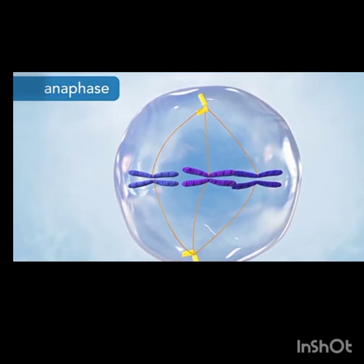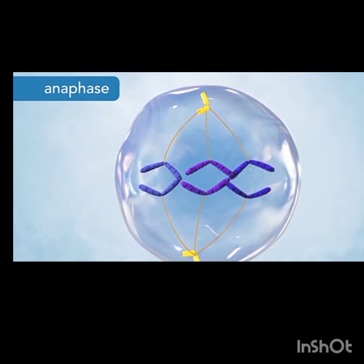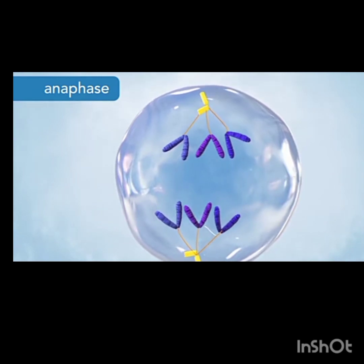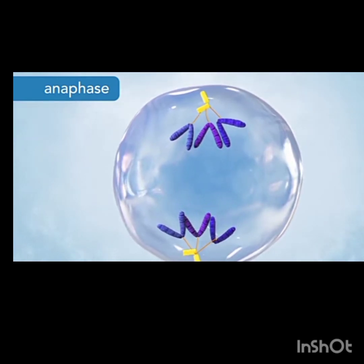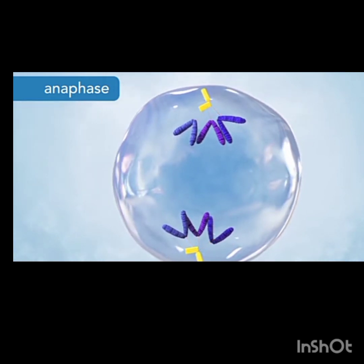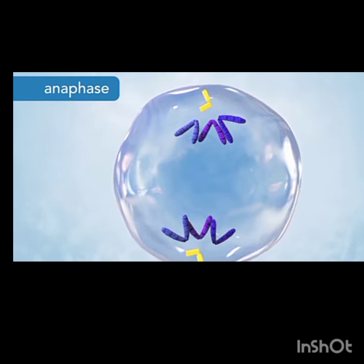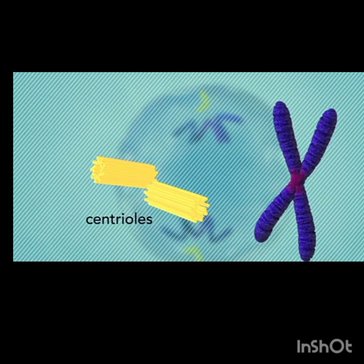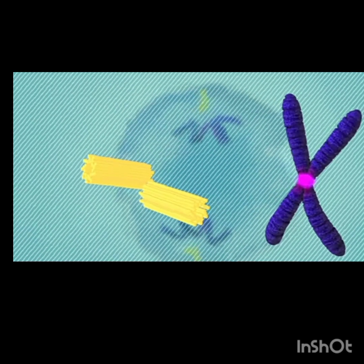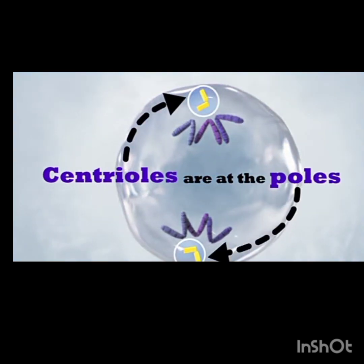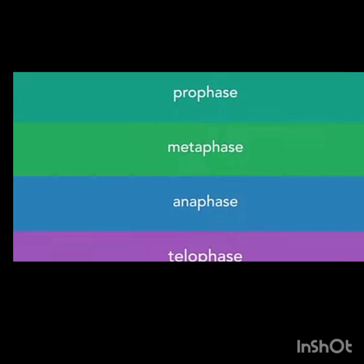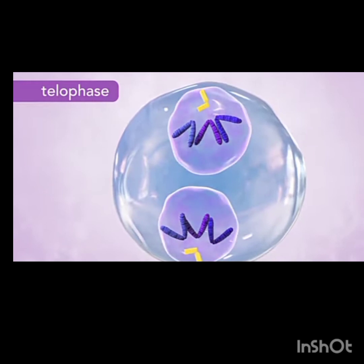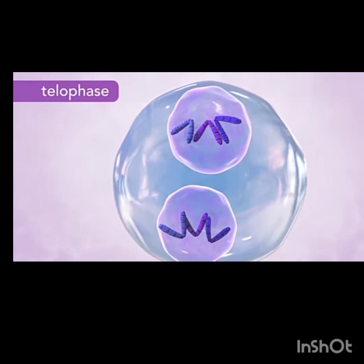In anaphase, the spindle fibers pull the chromosomes toward either side of the cytoplasm. The spindle fibers reduce in size as they shorten and pull. Do not confuse centrioles, which are the hair-like structures at the cell poles, with the centromere, which is in the middle of the sister chromatids.